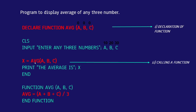This is the function call: we write x = abc(a, b, c). The function name is abc and the parameters are a, b, c — you can copy these same names from the declaration. By writing this we are calling the function and passing the values of a, b, c — that is 10, 20, 30 — to the function.